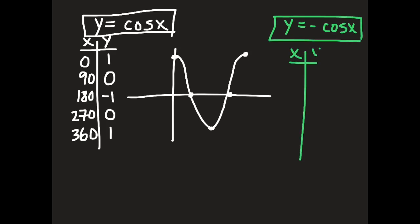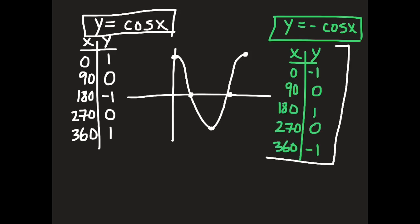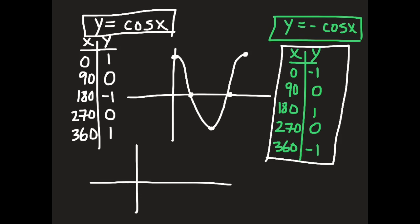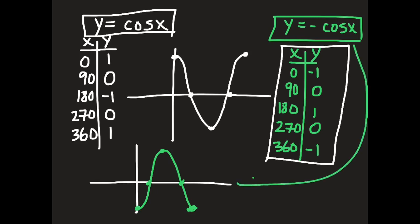For y equals negative cos, it's a reflection in the x-axis. Starting not at the highest point but at the lowest, then going to the middle, then the highest point, back to the middle, and back to the lowest — the upside-down version of the cosine graph. That's what y equals negative cosine looks like. These graphs are important when doing word problems so you know what type of graph you're looking at.